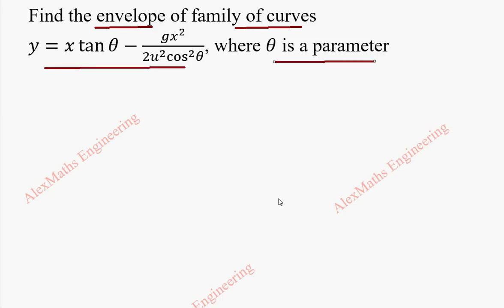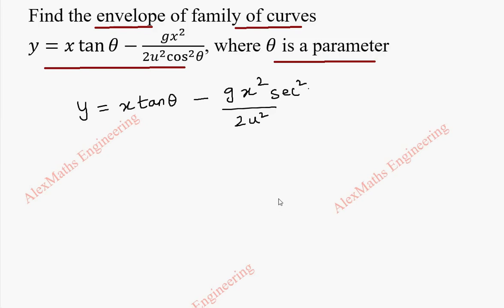To get the envelope, we have to differentiate with respect to the given parameter and eliminate the parameter. First step, we are going to read in this equation: y equals x tan theta minus g x squared by 2u squared. This cos squared theta, if we take to the numerator, it becomes secant squared theta.